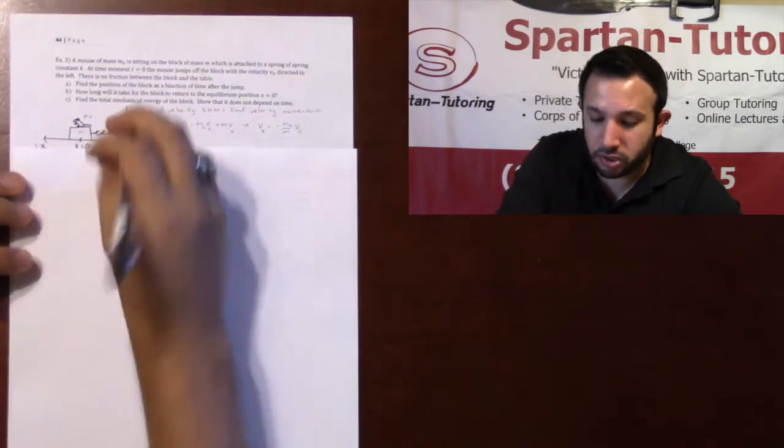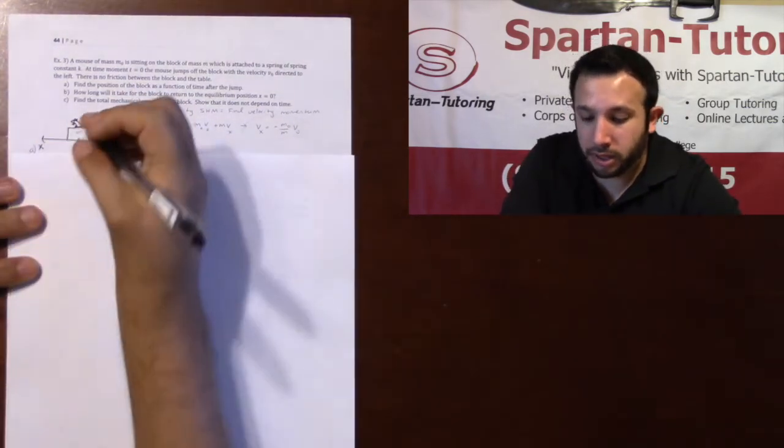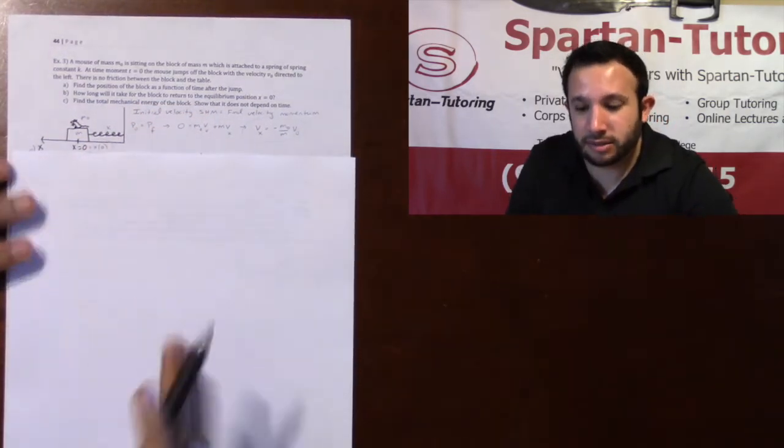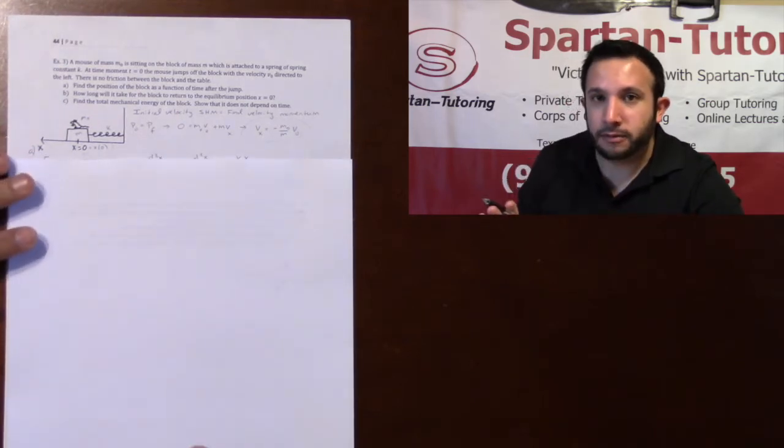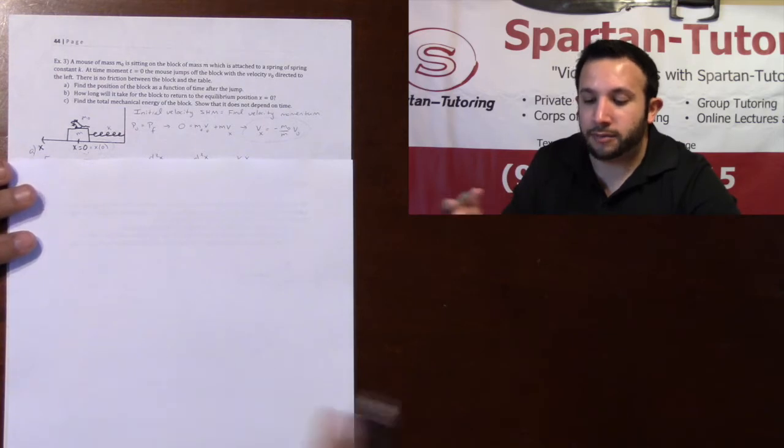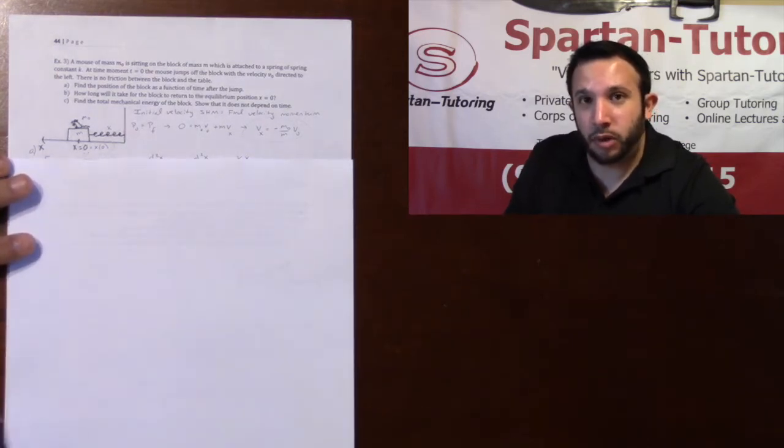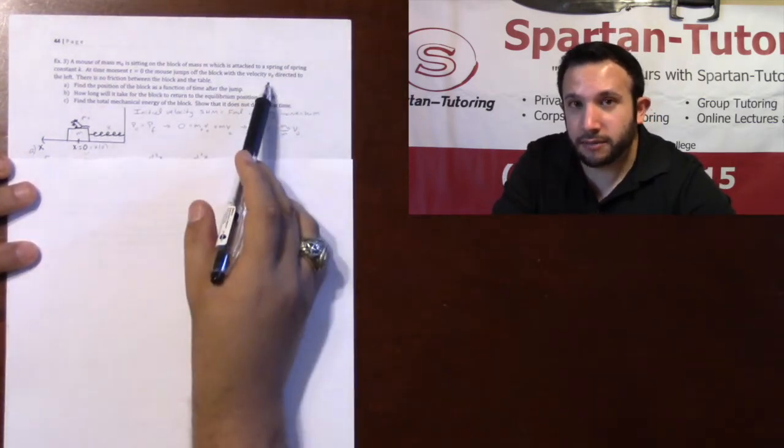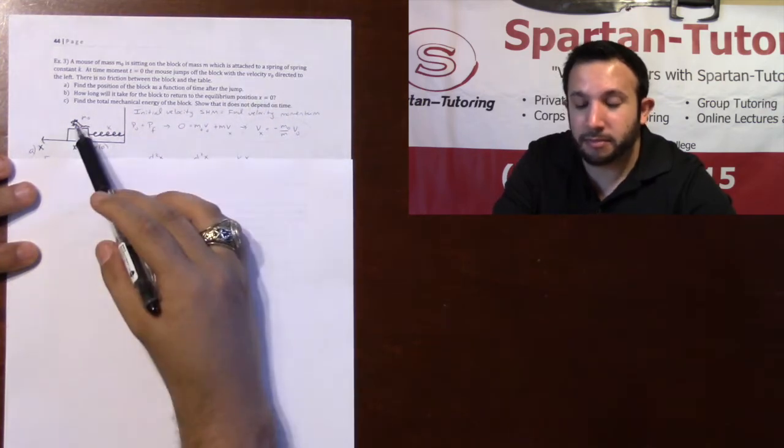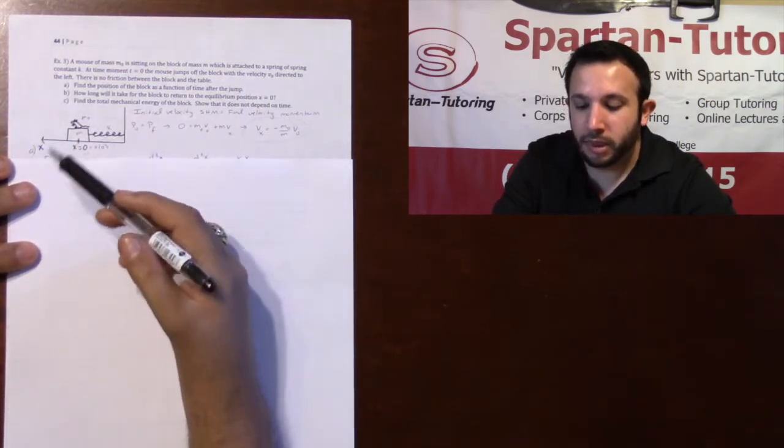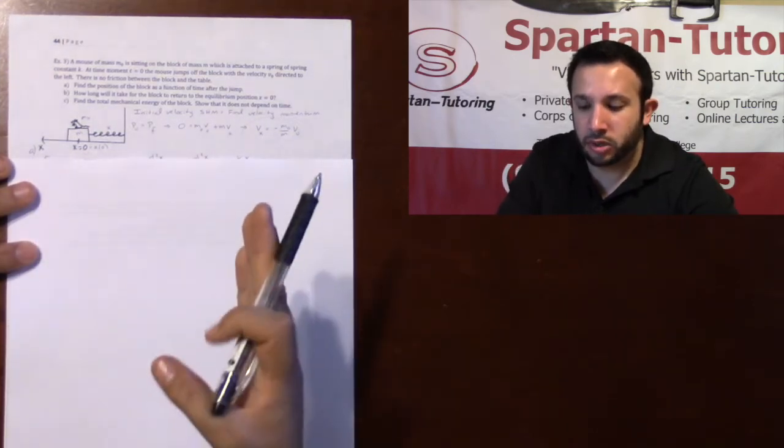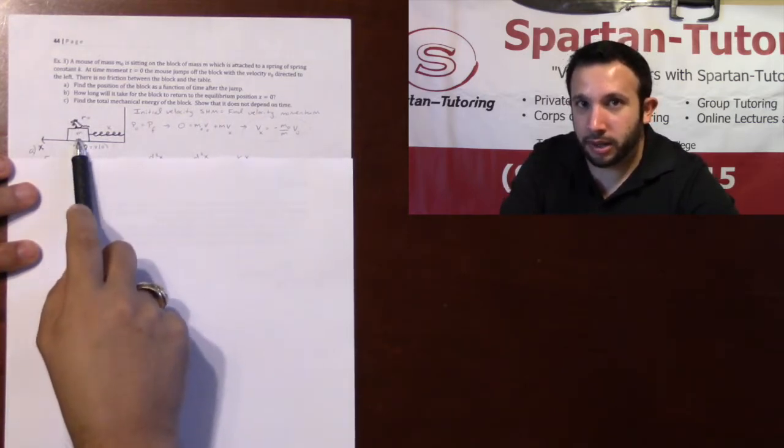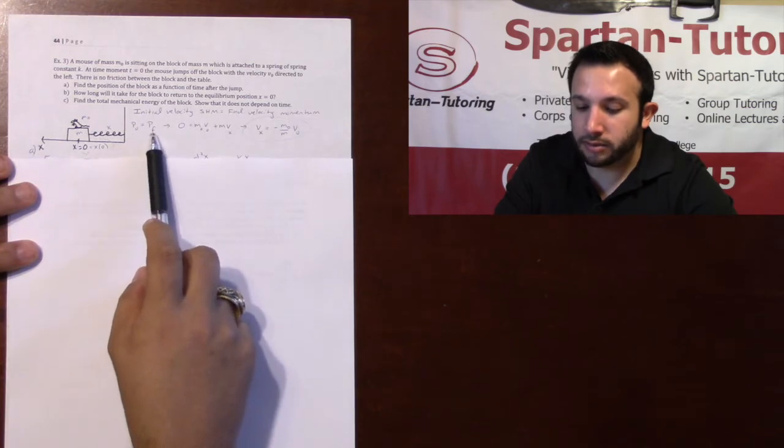So here's the thing. Your initial position for simple harmonic motion is zero. In this situation, your x0 is zero, because after the mouse jumps off, that's when it begins to go back and forth. And so this time you have to have an initial velocity. But the initial velocity of this block is not v0. v0 was the velocity of the mouse when it jumped to the left. So your initial velocity of simple harmonic motion will be the final velocity of momentum between the mouse and the block.